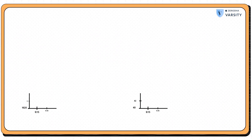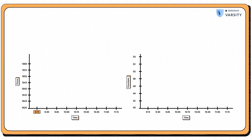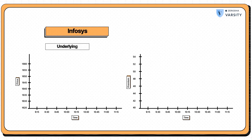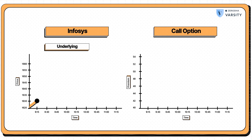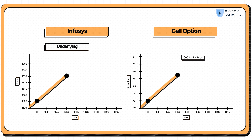Here's something I noticed this morning. At 9:15 a.m. when the market opened, Infosys was trading at 1630. I noticed that there was a call option at 1660, which was trading at a premium of 42. At 10 a.m., Infosys price increased to 1650 and the same call option — that is the 1660 strike price — premium shot up to 49 rupees, a 7 rupee increase in premium.